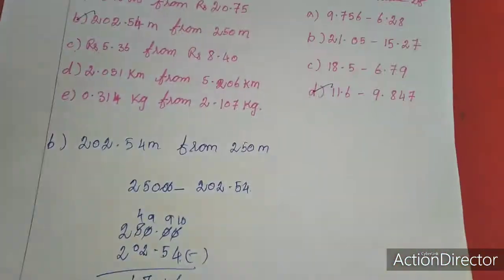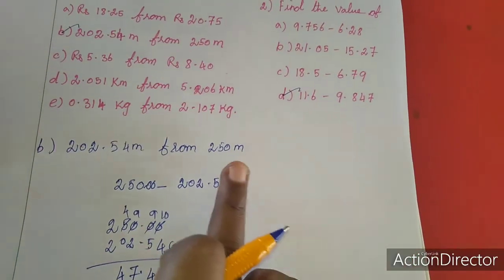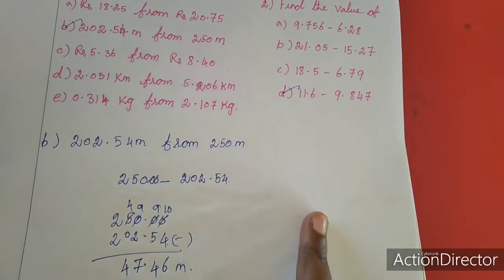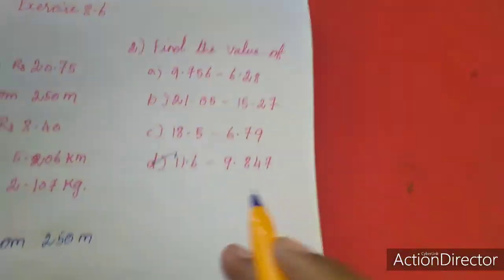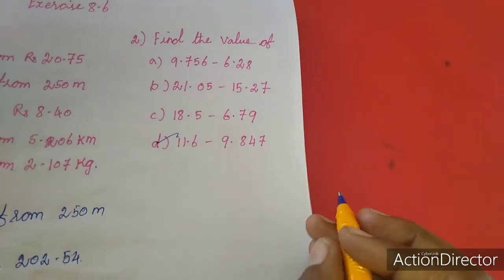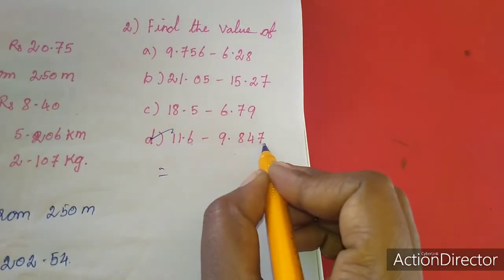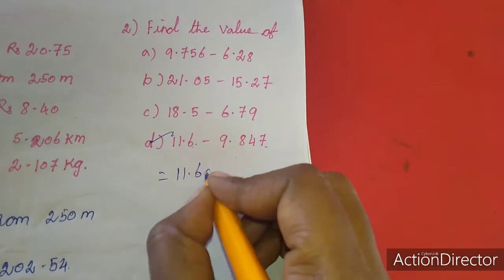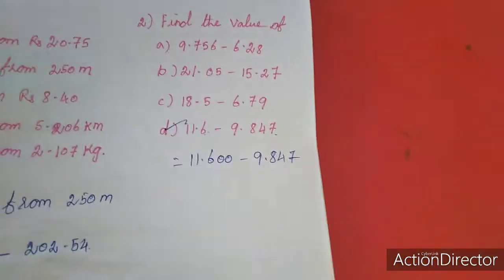Here, for every sum you have to equalize the digit and then subtract. If they gave from means second number you have to write as first, then second. First number will go move to second. This is the clue here. Now second sum, second sum means find the value. Here directly they gave, so we will work out directly but we have to refer the dot. Dot after one digit, here we have three digits.